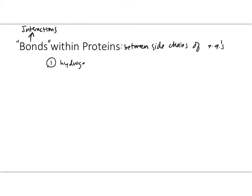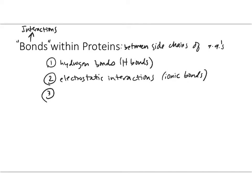The second one is electrostatic interactions, which you may have heard of in other classes as ionic bonds. The third type of interaction is the van der Waals, and you may have heard some talk of these in a chemistry course as a London dispersion force.